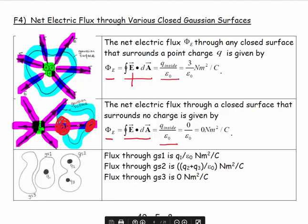So if there's no charge inside the Gaussian surface, or no net charge, no overall charge, then there's no net arrows leaving or entering, and so the flux is zero.